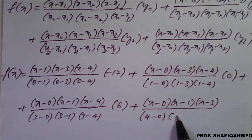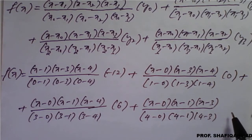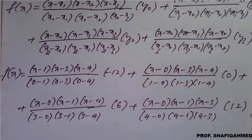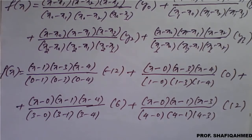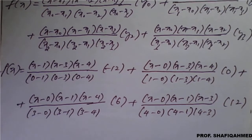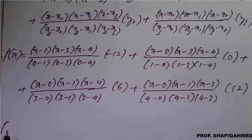For the last term: (4 minus 0)(4 minus 1)(4 minus 3) into Y3 value is 12. Once we get this, we can see that since X value is not fixed, on simplification we will get an equation or polynomial. So we will see the simplification.